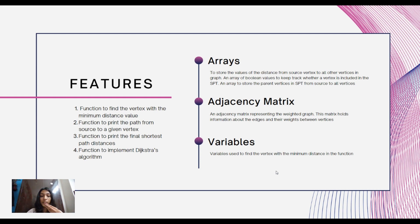We used variables like minimum and minimum index to find the vertex with the minimum distance in the minimum distance function. This code uses these data structures to perform Dijkstra's algorithm on the provided graph, keeping track of distances, visited vertices, and parent vertices in order to find the shortest paths from the source vertex to all other vertices in the graph.